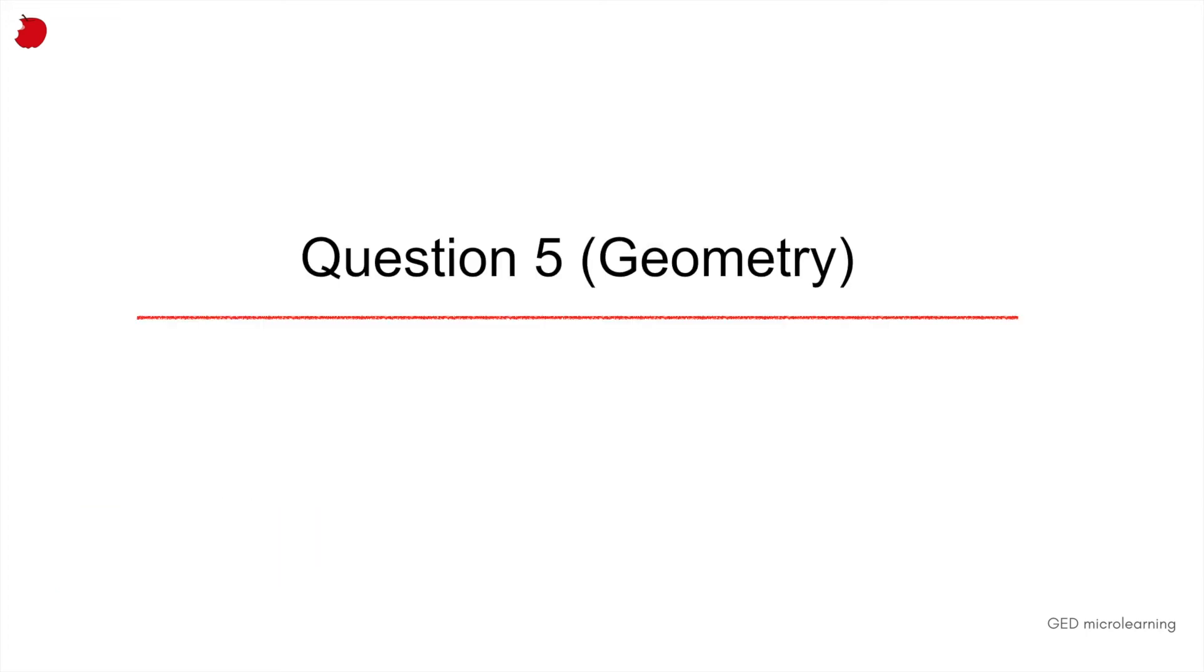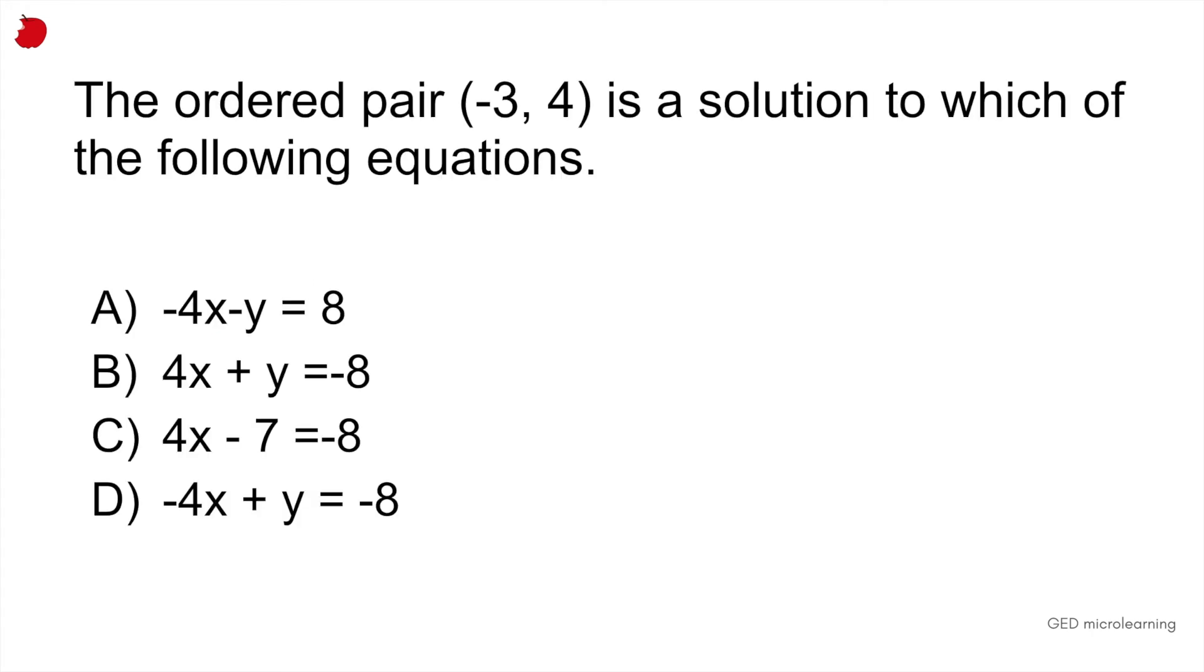And our final question today, geometry as always, and here they're giving you ordered pairs, and they're asking you which of these ordered pairs can solve the equation provided. So the question says, the ordered pair minus 3 comma 4 is a solution to which of the following equations. And they give you four equations.